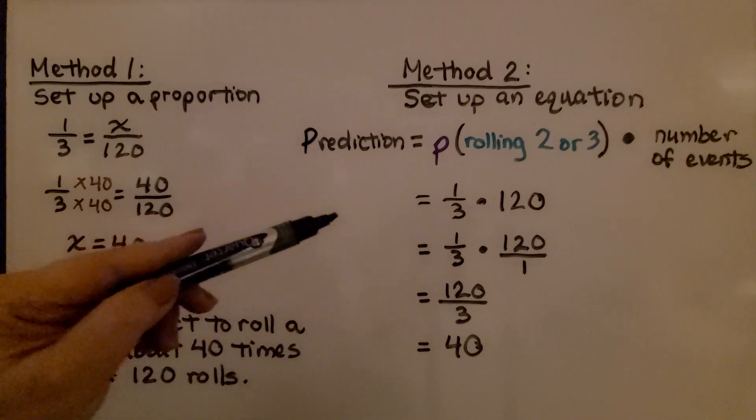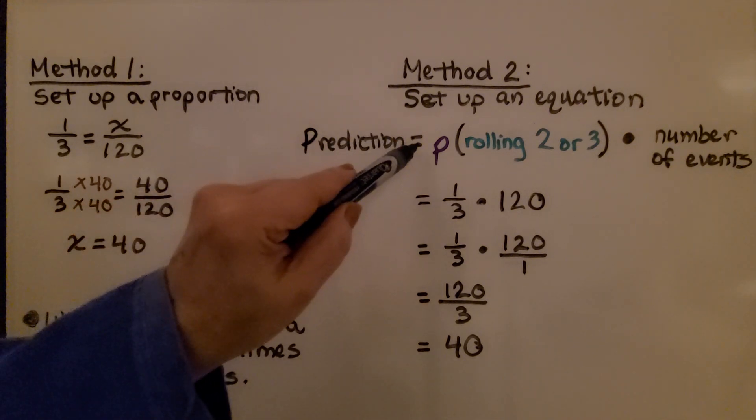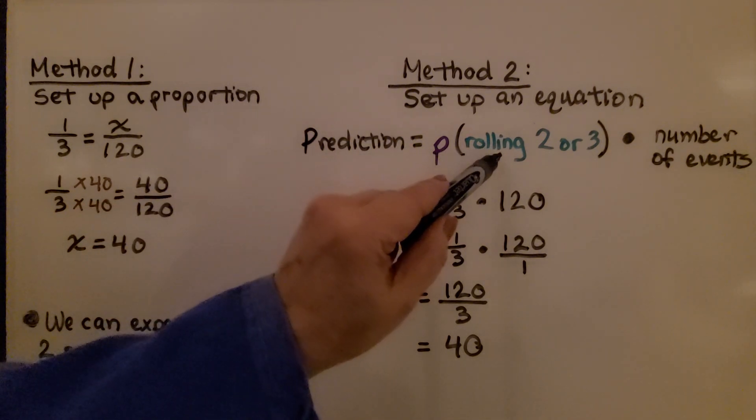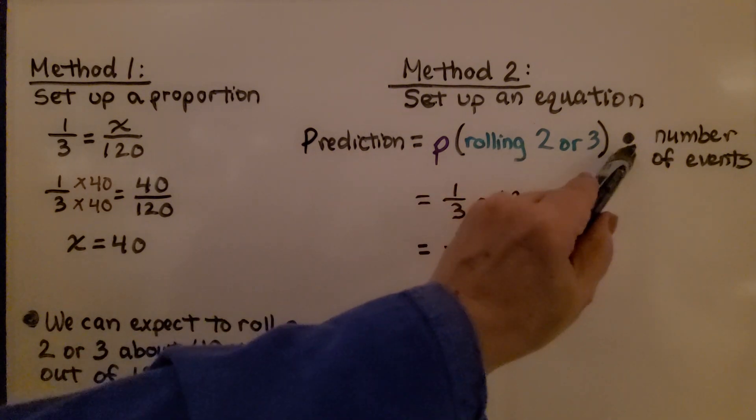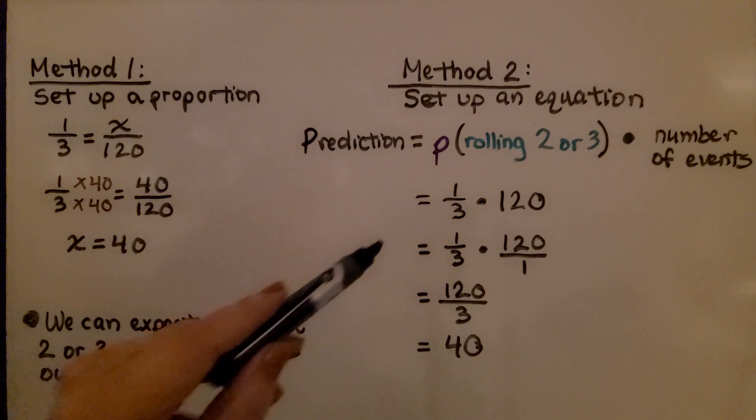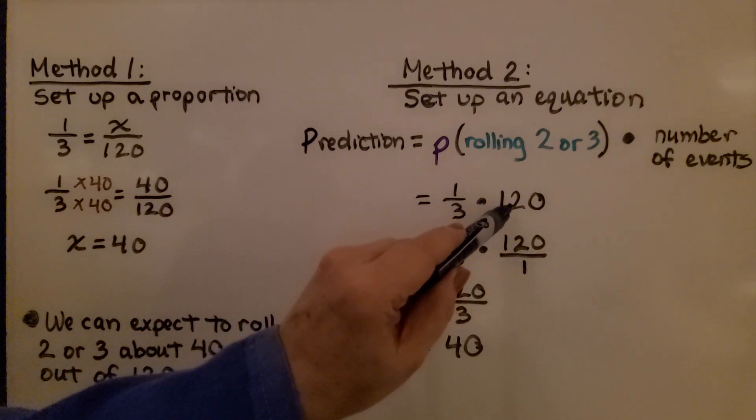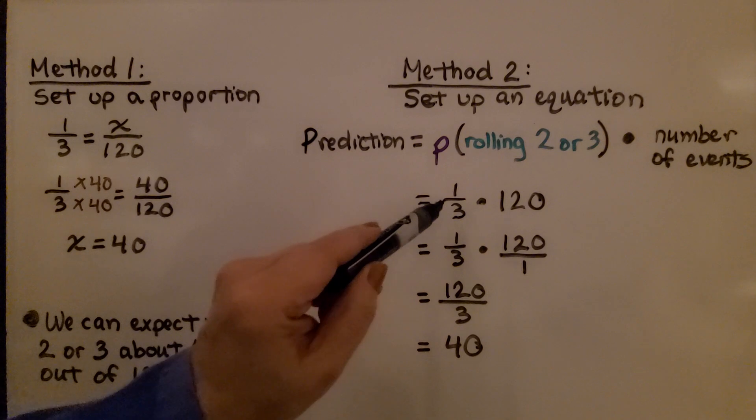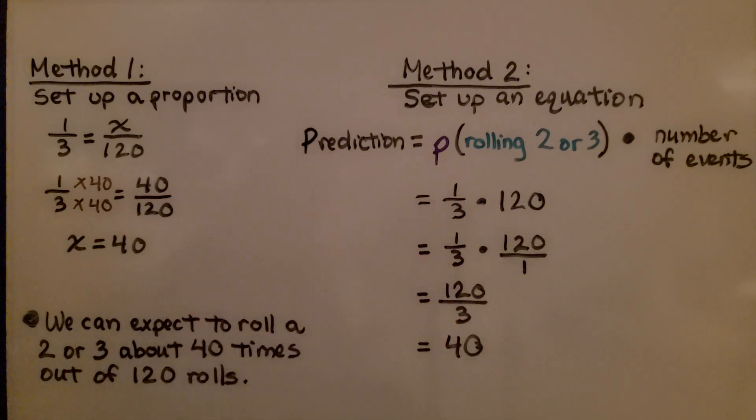For method 2, setting up an equation, our prediction is going to equal the probability of rolling a 2 or 3 multiplied by the number of events. The probability of rolling a 2 or 3 is 1/3. The number of events is 120. We're going to multiply 1/3 times 120.